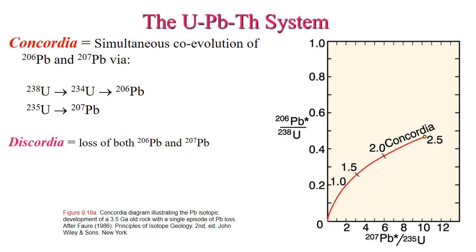This concludes our brief discussion on radiogenic and stable isotopes. In the next couple of lectures, we're going to be using these systems and these elements to help us better understand how magmas evolve, how magmas are generated, and why we think the Earth is the way it is. Join us next time for the conclusion of our generation of basaltic magma lecture.